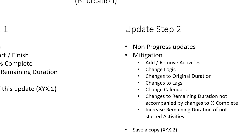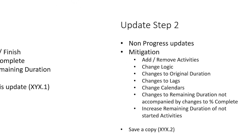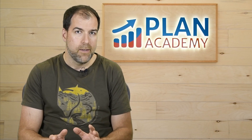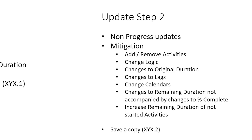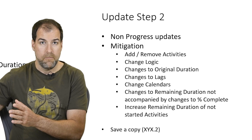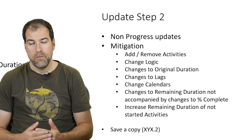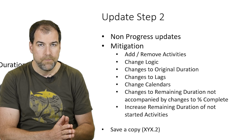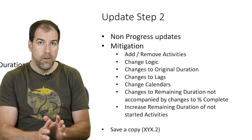Step two is what the forensic guys call non-progress updates, or mitigation — it could also include changes and other things. These are the typical things you do in the second step: you might add or remove activities, change logic, change original durations or estimates for activities that haven't started, change lags or calendars. Changes to remaining duration not accompanied by a change in percent complete — meaning an activity is half done and you've revised the effort to finish. Increasing remaining duration of a not-started activity — revising estimates. These are called non-progress updates, and they go into step two.